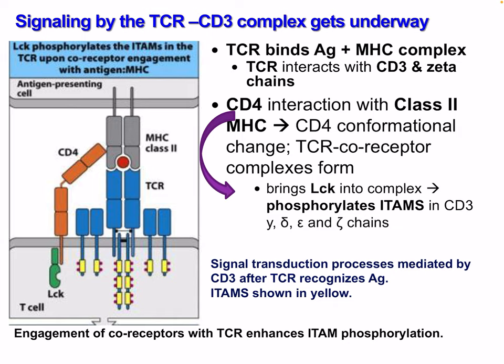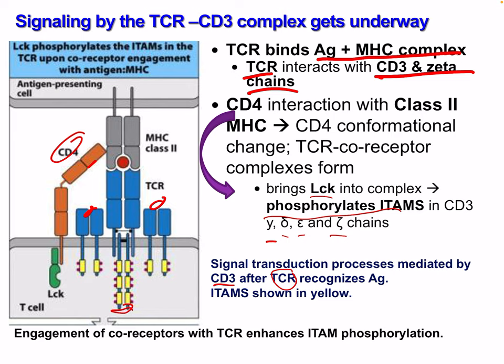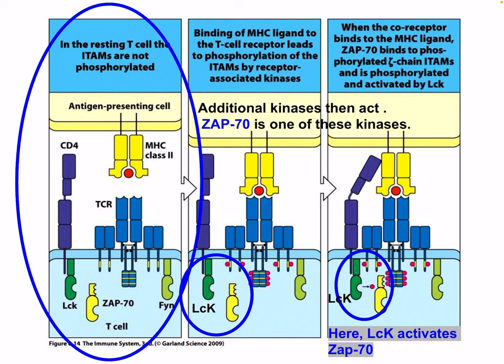When the T cell receptor binds to the antigen-MHC complex, the T cell receptor interacts with the CD3 and Zeta chains. The CD4 interaction with class 2 MHC results in a CD4 conformational change. This T cell receptor co-receptor complex forms, bringing LCK into the complex, which phosphorylates the ITAMs in CD3 gamma, delta, epsilon, and zeta chains. This signaling process is mediated by CD3 after the T cell receptor is engaged. Engagement of co-receptors with the T cell receptor enhances ITAM phosphorylation.